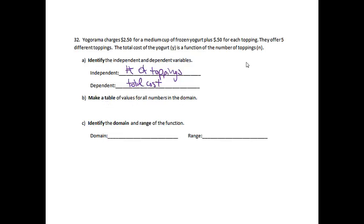All right, then it says to make a table of values. And instead of using X and Y, we'll use N and Y. Okay, they offer five different toppings. Well, I don't have to get any toppings if I don't want to. So 0, 1, 2, 3, 4, 5. If I don't pick any toppings, it's going to be $2.50.